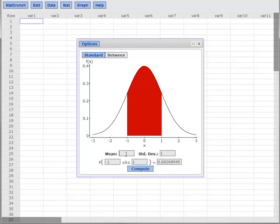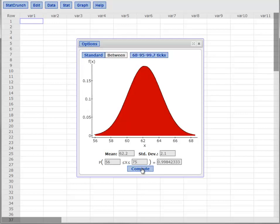We have to tell it what the mean was. The mean was 62.2. The standard deviation was 2.1. And then now we want to know the area between two values. So the low end was 56 inches and the upper was 75. Hit compute.